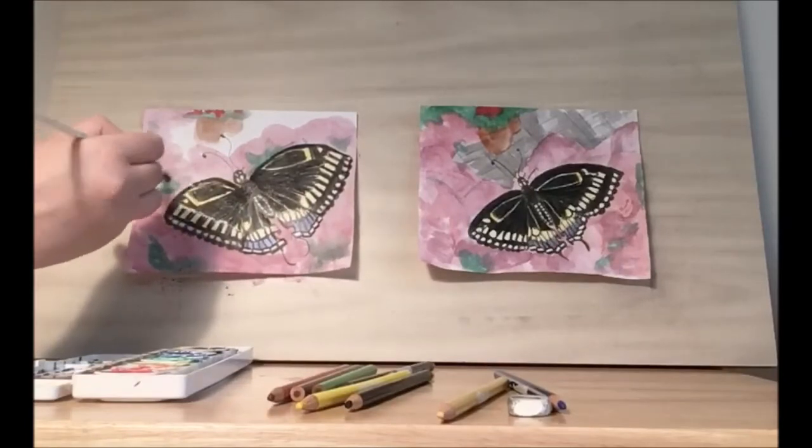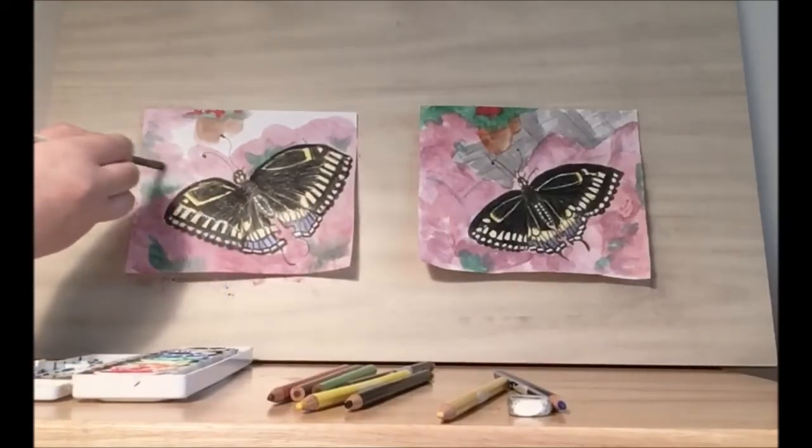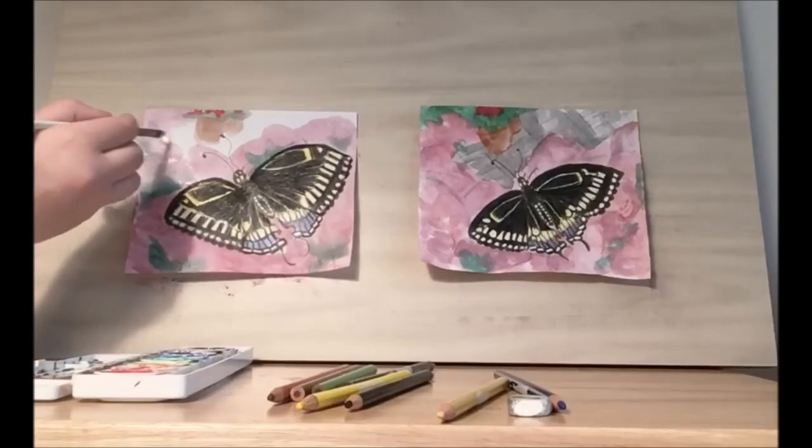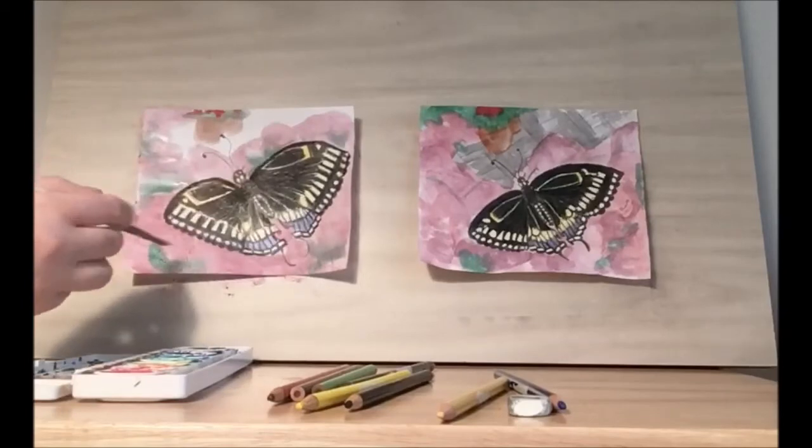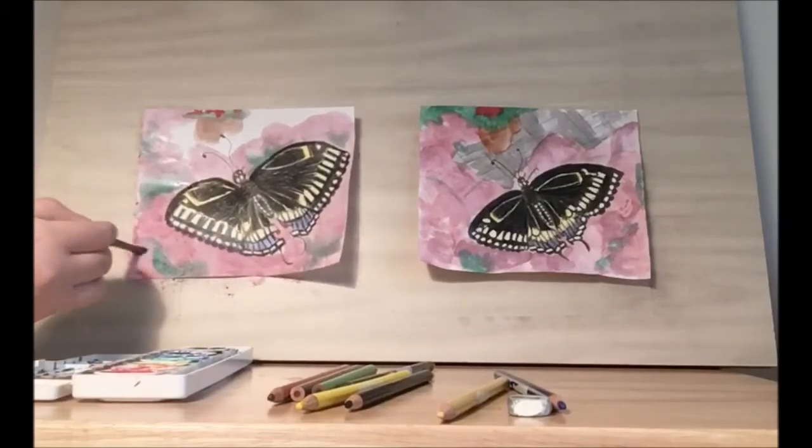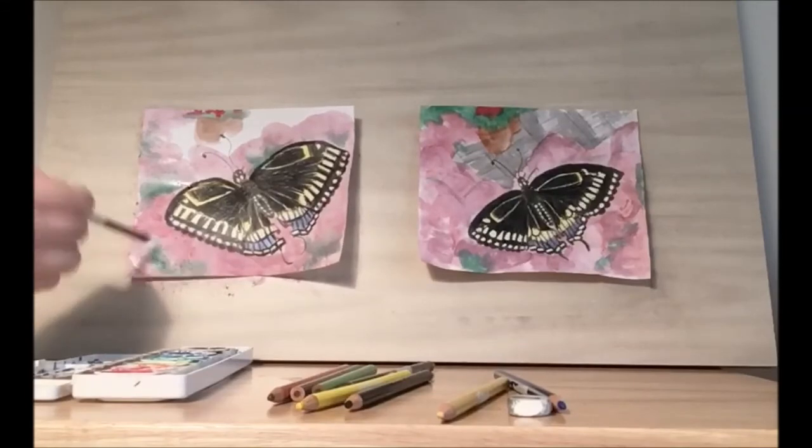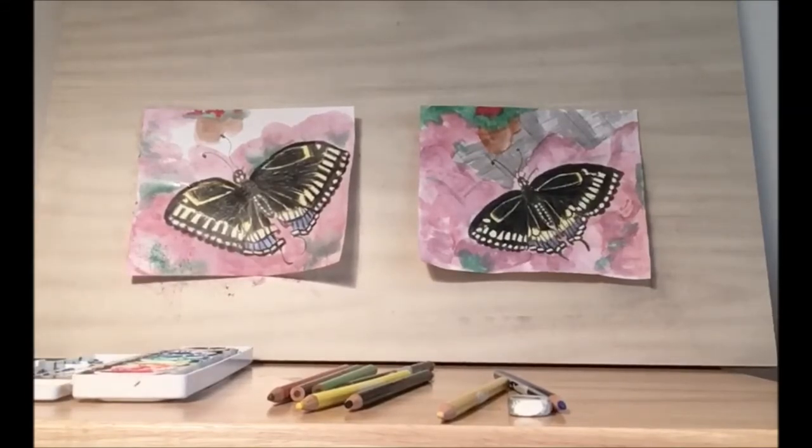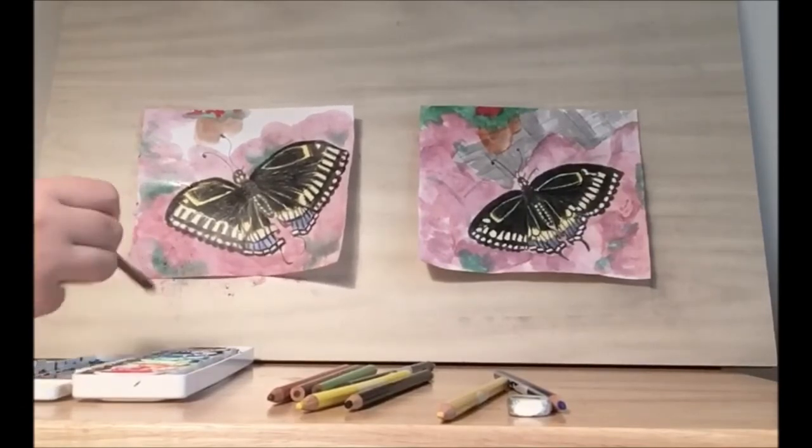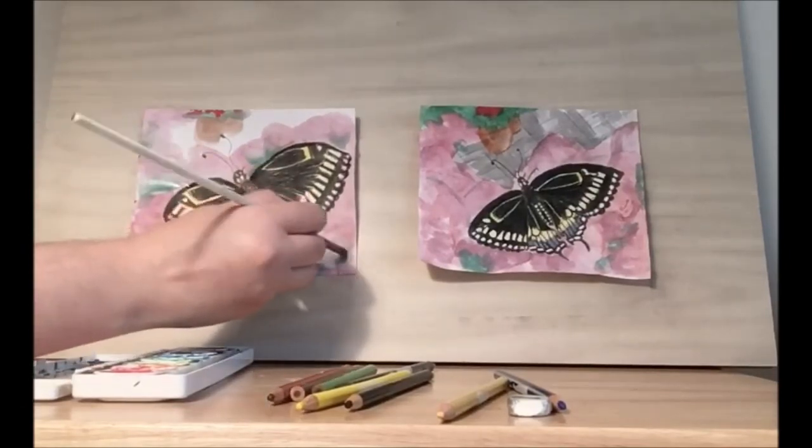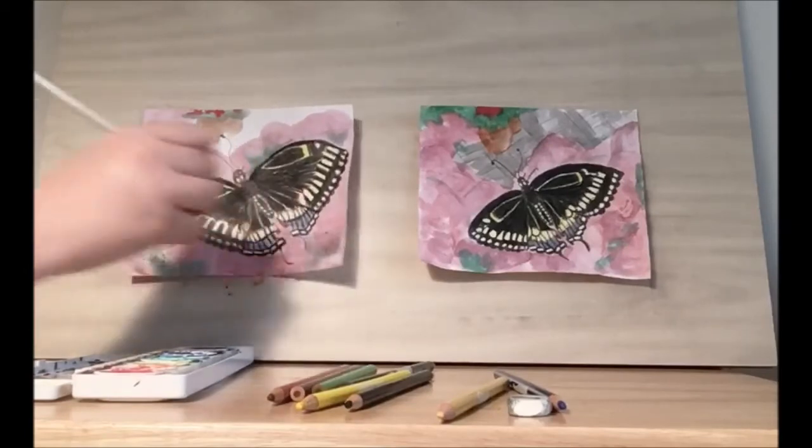Since we have such detail with our butterfly we don't want to have these flowers too detailed, because we want if we were looking at this through a camera the focus would be on the butterfly and everything around it would be out of focus. So we're trying to create that here in our watercolor. If you found you put too much green you can add some of your pink back in. If you ran out of pink you can just mix some more.